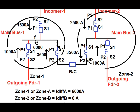The breakers on main bus 1 all trip, isolating the faulty section. For zone 2 or zone B, outgoing feeder 2 has 1000 amperes flowing from P2 to P1, and incomer 2 supplies 2500 amperes from P2 to P1, totaling 3500 amperes towards main bus 2. The current outgoing from main bus 2 towards main bus 1 is 3500 amperes flowing from P1 to P2, which is exactly opposite to the sum of the incoming currents. Therefore the zone 2 or zone B differential current is zero, and zone 2 remains under stable condition.